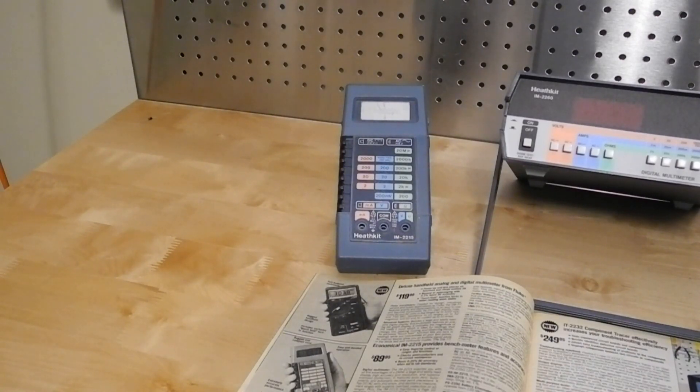In the same catalog, they were still selling the IM5228 vacuum tube voltmeter, which was little changed from the first design in 1947.